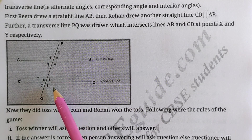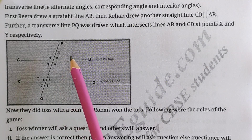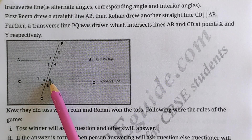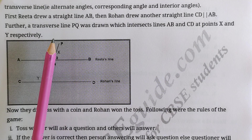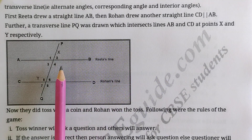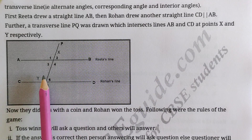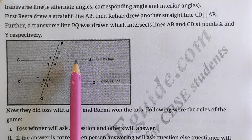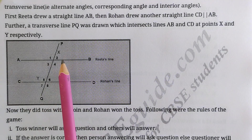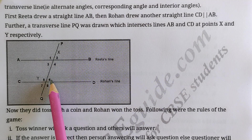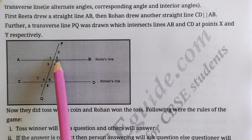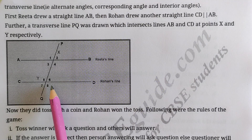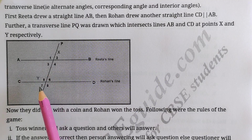Now, what are corresponding angles? The corresponding angle of angle 2 is angle 6. Their special property is that both are on the same side of the transversal. In alternate angles, the two angles are on opposite sides, but corresponding angles are on the same side of the transversal, do not form a linear pair, and one is interior while the other is exterior. So angle 2 equals angle 6, and angle 4 equals angle 8 — these are corresponding angles. Also, angle 1 corresponds to angle 5, and angle 3 corresponds to angle 7.